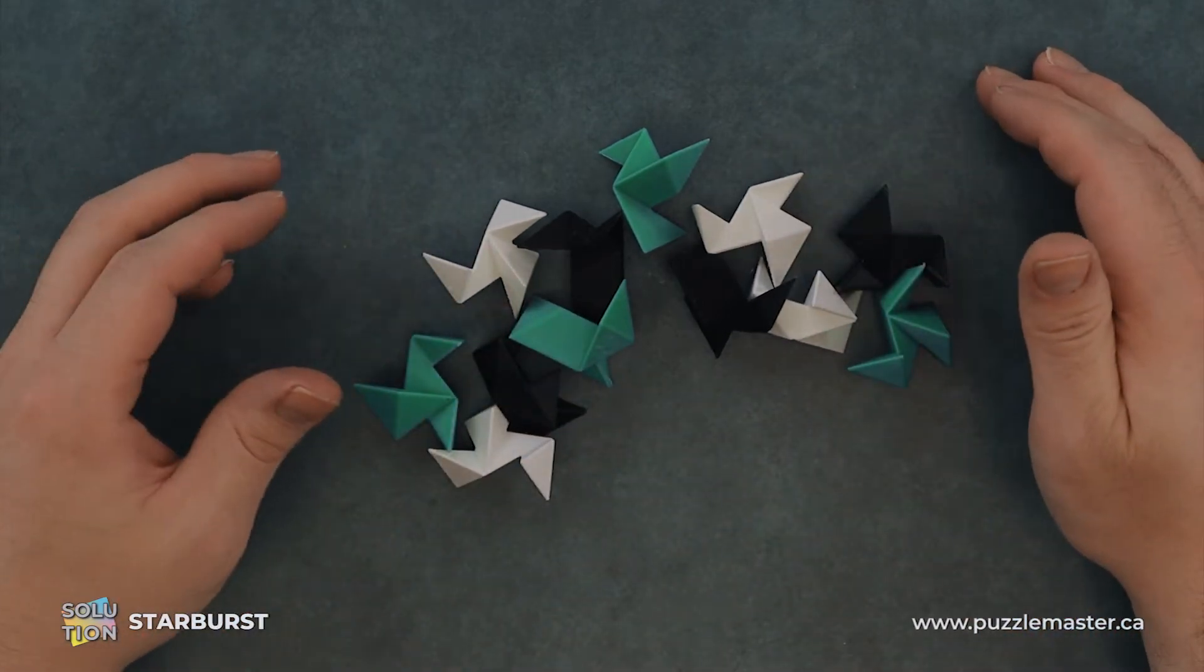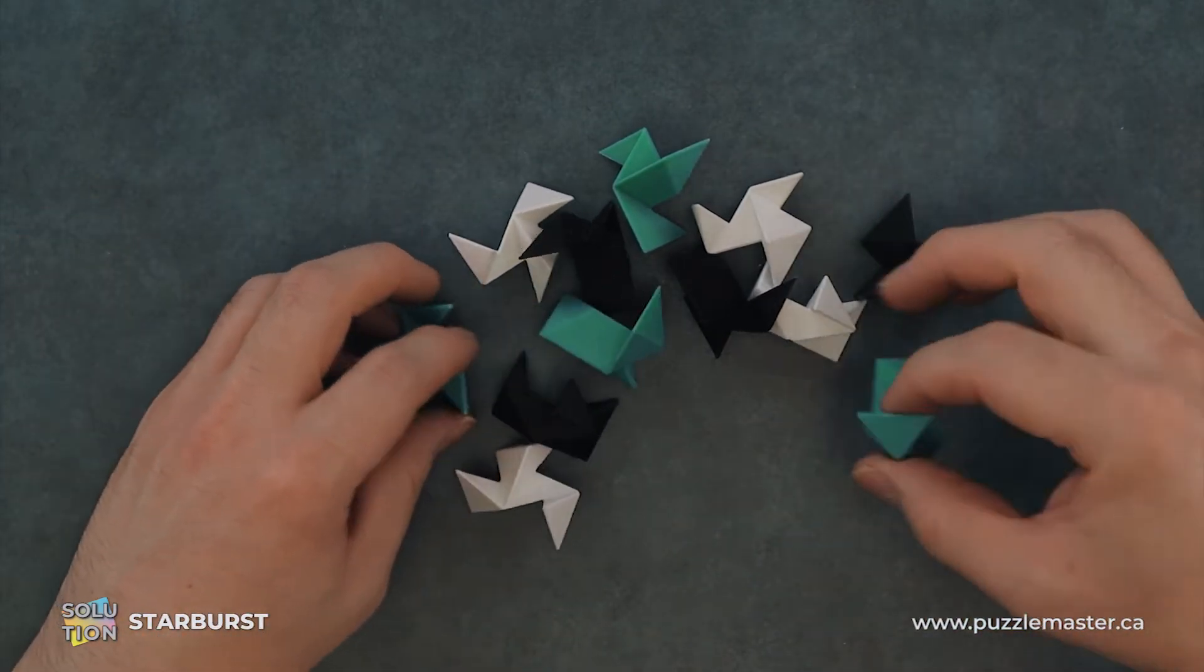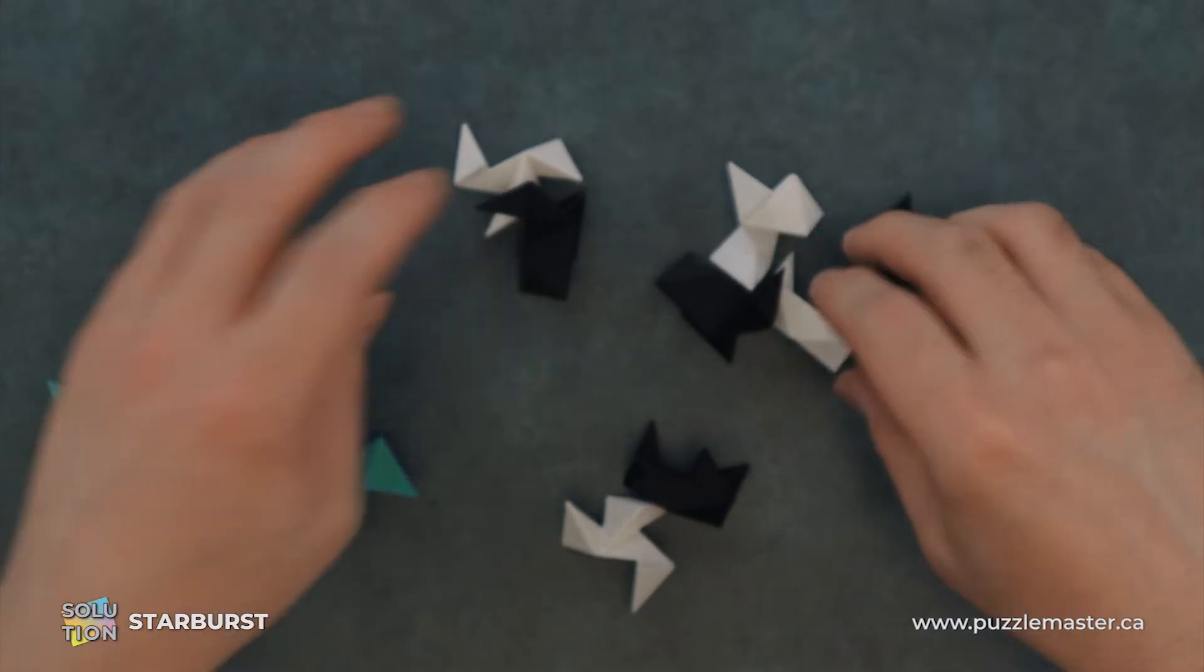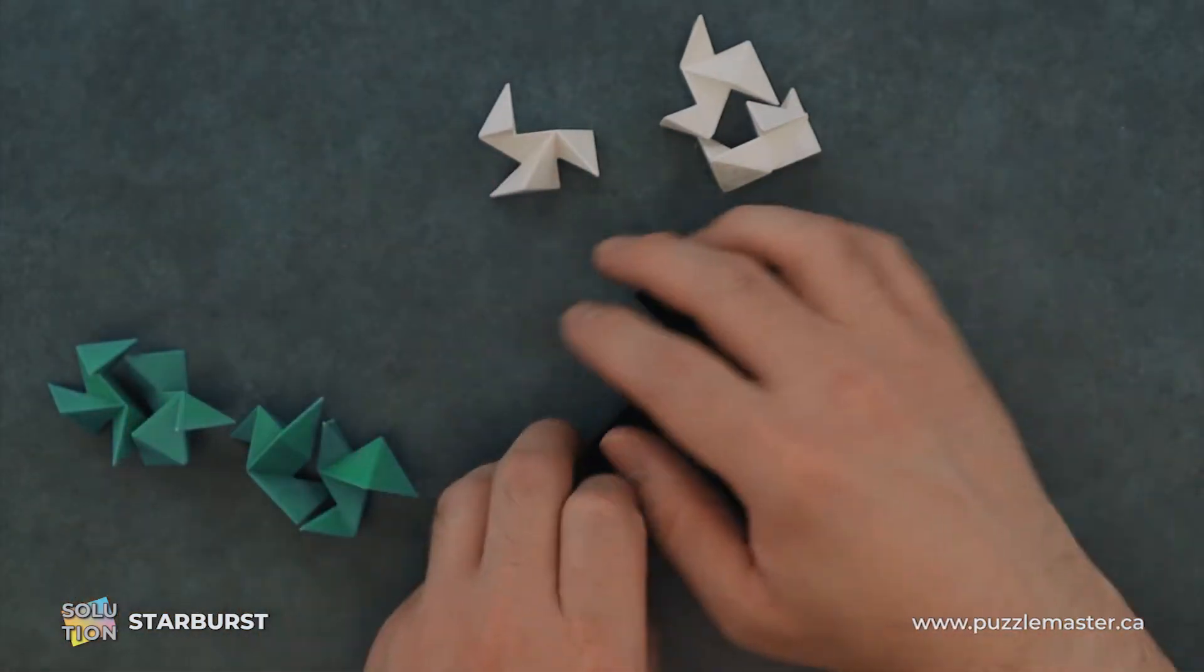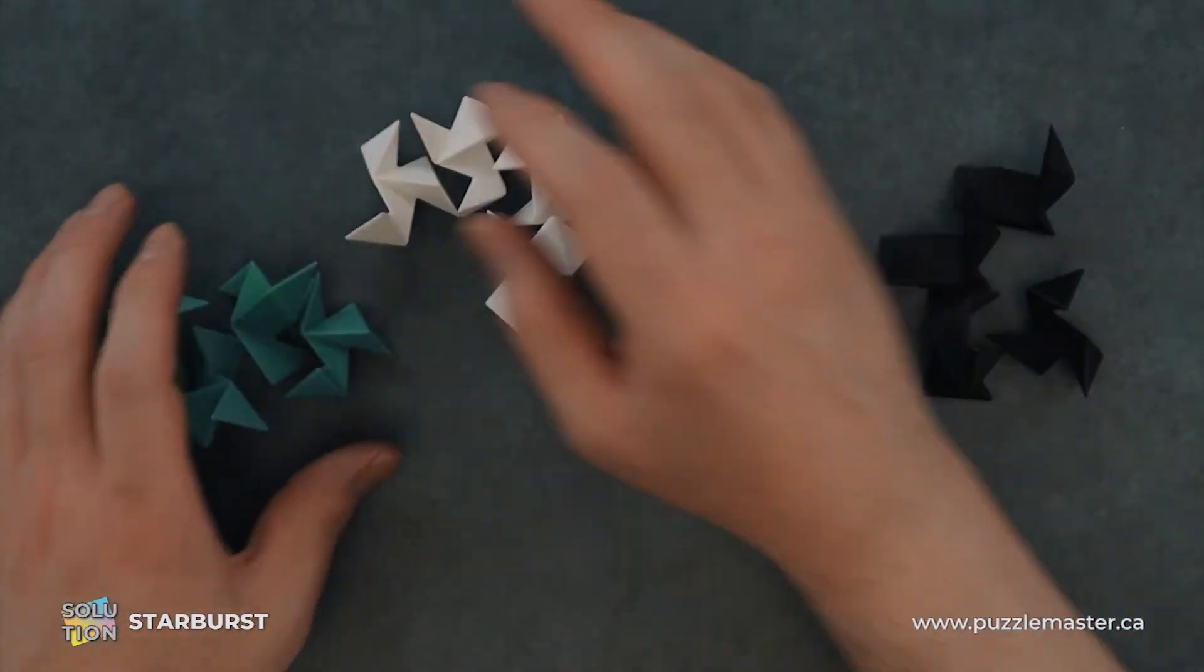And we got a bunch of little paper cranes pretty much. They're all identical pieces other than color. So we'll just sort them by color.